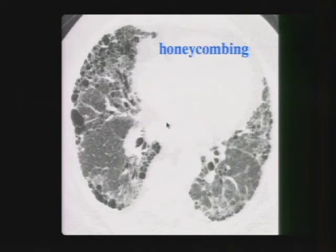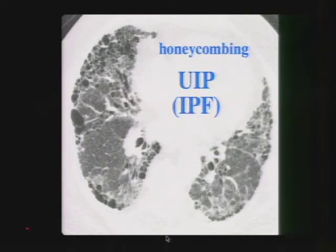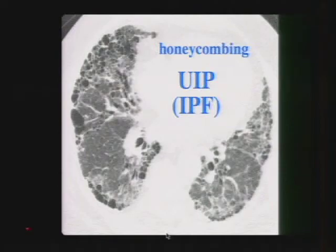The second finding to discuss is honeycombing. We see cystic areas of lung destruction in a subpleural location — you must see these black holes in a subpleural location to call it honeycombing. This patient has the most common cause of honeycombing: usual interstitial pneumonia, or UIP, with the associated disease being idiopathic pulmonary fibrosis, or IPF.